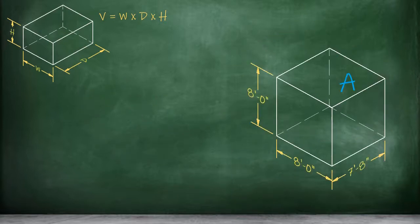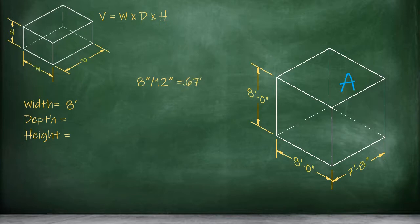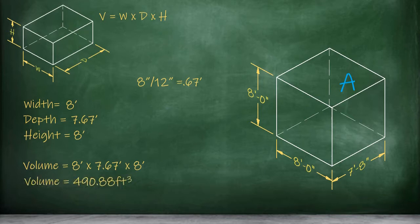Let's tackle space A first. To find the volume, we need to use the dimensions for width, depth, and height. Our width dimension is 8 feet, so no trouble there. Our depth dimension is 7 feet 8 inches, so we'll need to convert this into decimal feet before we can use the measurement in our formula. 8 inches divided by 12 inches equals 0.67 feet. When we add this back together with the 7 whole feet, we get a depth dimension of 7.67 feet. And our height dimension is also 8 feet, so no need to convert anything here. 8 feet times 7.67 feet times 8 feet equals a volume of 490.88 cubic feet for part A of our space.